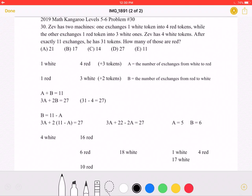Let's start with the first type of exchange, where one white token is exchanged into four red tokens. This will lead to a total of three tokens gained with each exchange. Let's let A be equal to the number of exchanges from white to red.